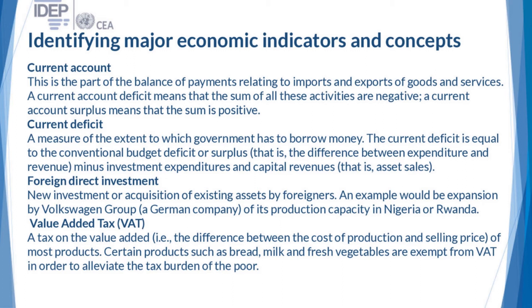Direct foreign investment is new investment or acquisitions of existing assets by foreigners — for example, the expansion of the Volkswagen Group's production capacity in Nigeria or Rwanda. Value-added tax is a tax on the value added, that is, the difference between the cost of production and the selling price of most products. Certain products such as bread, milk, and fresh vegetables are exempt from VAT in order to alleviate the tax burden on the poor.